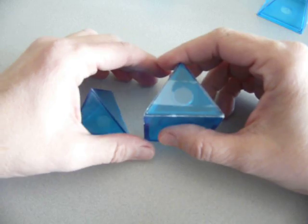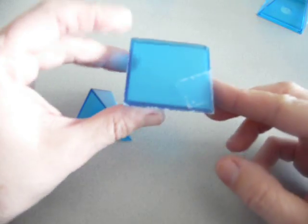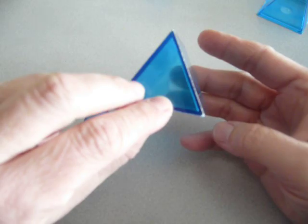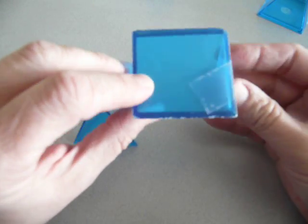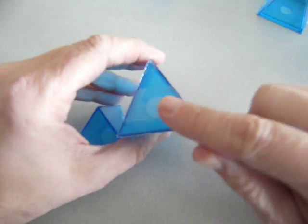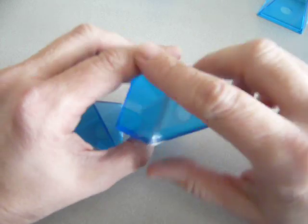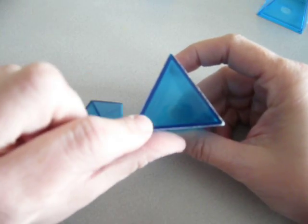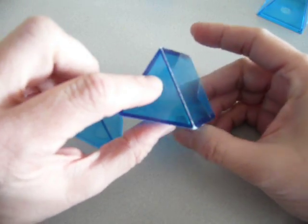A prism has two bases, two congruent bases. Congruent means the same size and the same shape. So these two triangles are considered the two congruent bases of this prism.